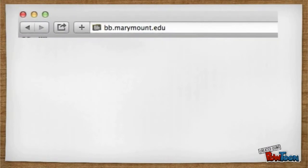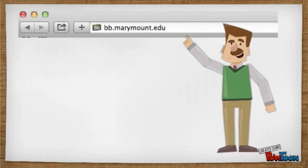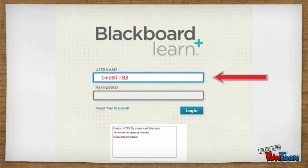First, access the World Wide Web and type in the website bb.marymount.edu. Next, type in your MU ID. This is the ID that contains three letters in the last five digits of your student ID.